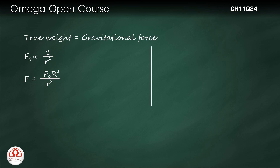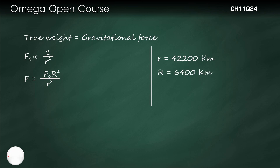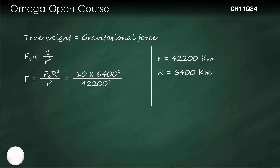The distance of geostationary orbit from the centre of the Earth is 42,200 km and the radius of the Earth is 6,400 km. Therefore, the true weight in the geostationary satellite is equal to 10 into 6,400 squared divided by 42,200 squared. Simplifying, we get 0.23 Newtons.